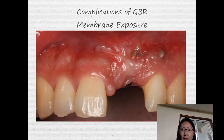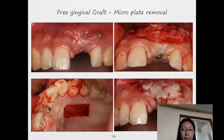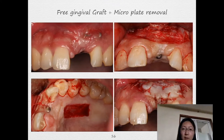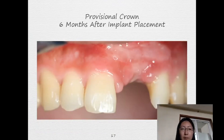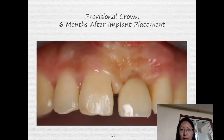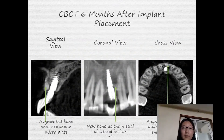This is five and a half months after healing. I decided to do another free gingival graft for this patient to cover the soft tissue defect. Here we cut the scar, make an apically positioned flap, and remove the micro titanium plate. We harvest another free gingival graft from the palate and place it on top of the defect. This is healing after one and a half months. Now we deliver the provisional crown to shape the gingival margin.